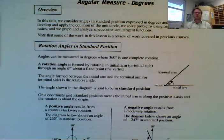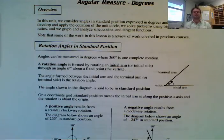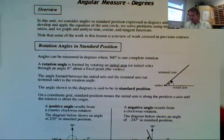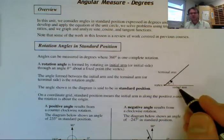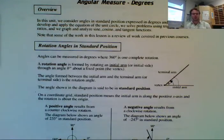A rotation angle is formed by rotating an initial arm through an angle of a certain degree about a fixed point or a vertex. So right here is my vertex, we have my initial arm and it gets rotated to something called the terminal arm. And that is what is standard position.